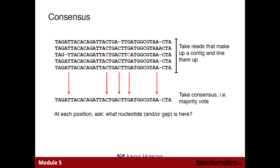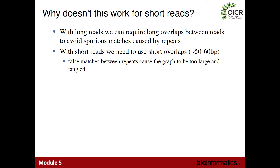This method of assembly — the overlap-layout-consensus paradigm — was developed for Sanger sequencing many decades ago. When Illumina sequencing first became available, people tried to apply these methods to short read data, and long story short they basically failed miserably. The number of reads and overlapping reads from an Illumina run caused the assembly graph to be far too large — hundreds of billions, if not a trillion nodes — basically exhausting the available memory. So for short reads, we had to develop entirely new classes of algorithms to deal with the volumes of data that Illumina sequencing produced.